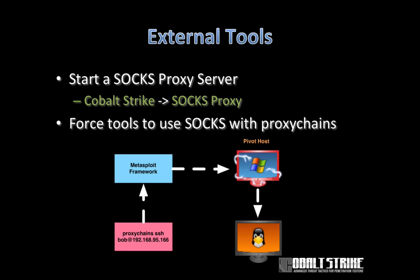Now let's talk about external tools. I mentioned it's not possible to use external tools through a Metasploit Framework proxy pivot — but that's only partially true. You can start up a SOCKS proxy server that uses the Rex socket library to fulfill requests. Go to Cobalt Strike, SOCKS Proxy — this starts up that proxy server. Anything that goes through this proxy server will take advantage of the Metasploit Framework pivots that are set up.